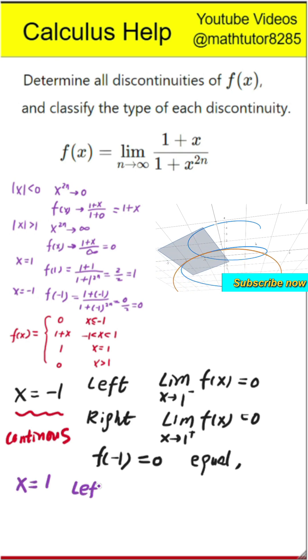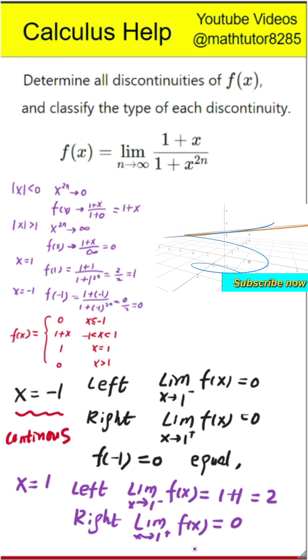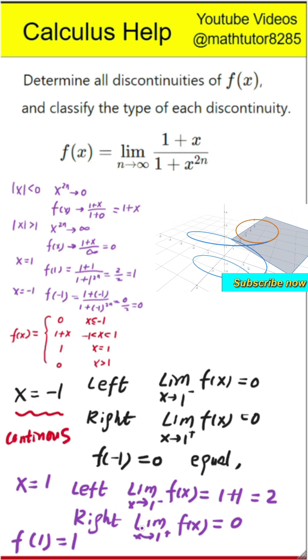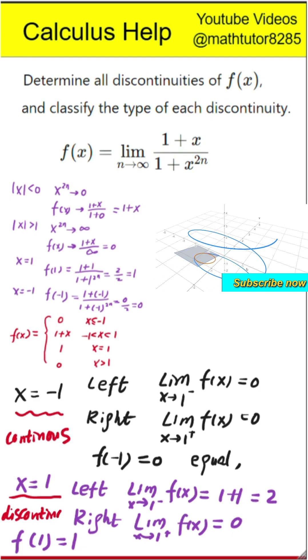Now check at x equals 1. Approaching from the left, 1 plus x becomes 2. Approaching from the right, f of x is 0. But f of 1 is 1. So the left and right limits do not match, and the function value is not equal to either. This is a classic jump discontinuity, also known as a first-kind discontinuity.